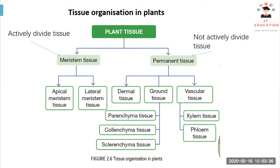For plant tissue organization, we can separate into actively dividing and not actively dividing tissues. Actively dividing tissue is called meristem tissue; not actively dividing is called permanent tissue. For meristem tissue, we have apical meristem and lateral meristem. For permanent tissue, we have dermal tissue, ground tissue, and vascular tissue. Under ground tissue, we have parenchyma, collenchyma, and sclerenchyma.